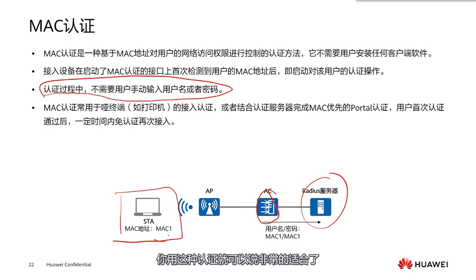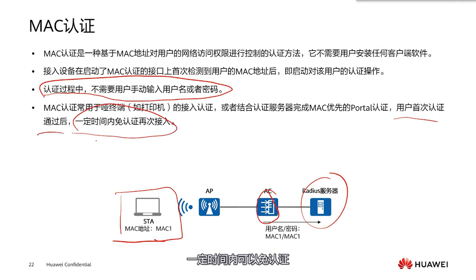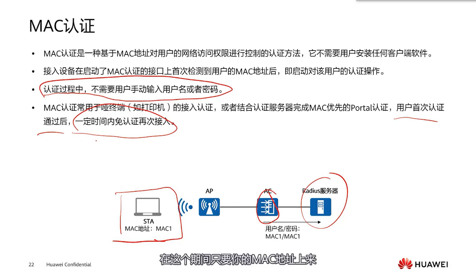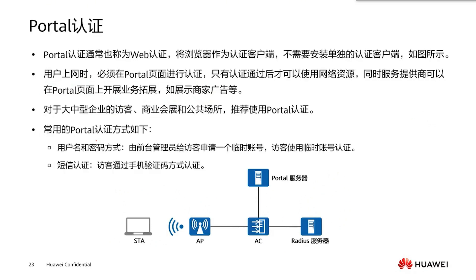MAC authentication also supports exemption from re-authentication for a certain period of time after the first successful authentication. This combines portal and MAC: first you authenticate through the portal, then the device remembers your MAC address, a timer is activated, and as long as your MAC address is detected within that period, it is let through directly. This usage is also supported to give users a good experience, and we need to plan our services flexibly.